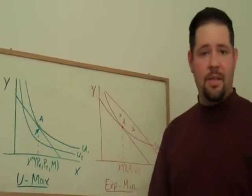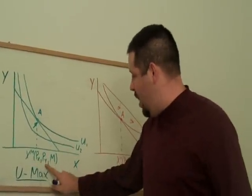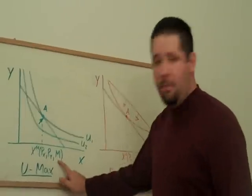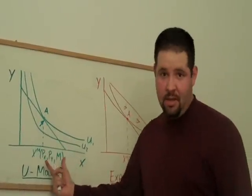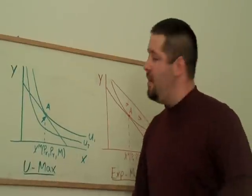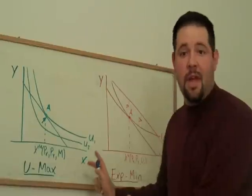It's going to be a function of prices, price of X, price of Y, and the income that this consumer has available. And so these are income constant demand curves. They come from the utility maximization problem, and these are called Marshallian demand curves.